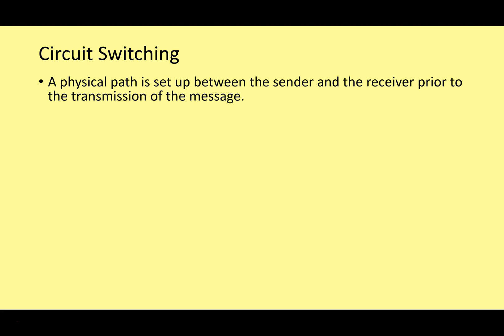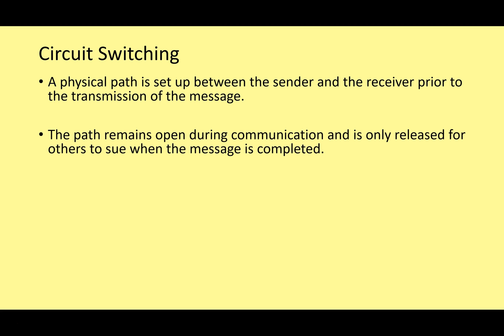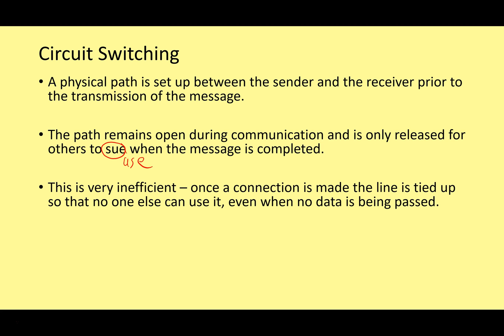With circuit switching, a physical path is set up between the sender and the receiver prior to transmission of the message — in the picture that was a telephone call, but it could be any kind of data. The path remains open during communication and is only released for others to use when the message is completed. This is very inefficient: once the connection is made, the line is tied up so no one else can use it, even when no data is being passed.